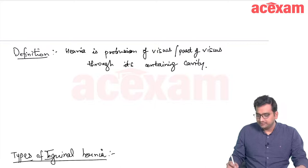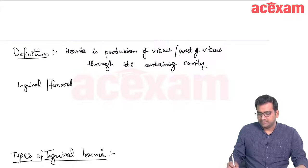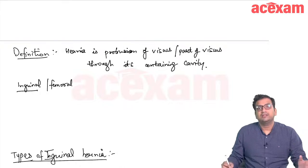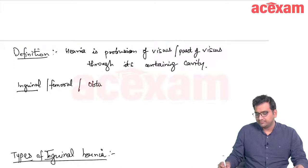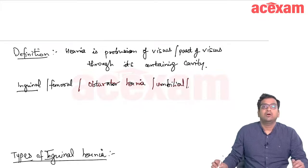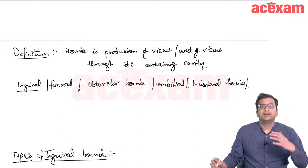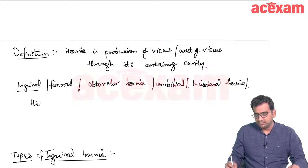Hernia can be of various types. It can be inguinal hernia or femoral hernia. Inguinal hernia passes through the inguinal canal, femoral hernia through the femoral canal. It can also be obturator hernia, umbilical or paraumbilical hernia, incisional hernia, or hiatus hernia — which passes through the gastroesophageal junction.